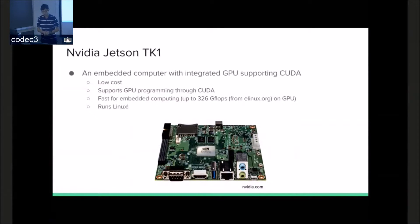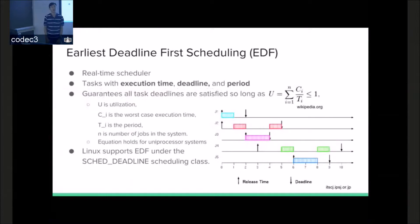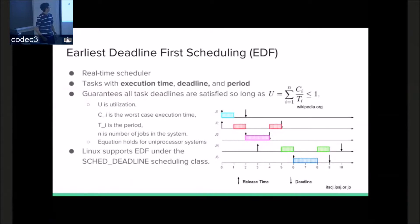Why does this matter? Because we want to run this in real time using something called Earliest Deadline First scheduling. This is a real-time scheduler — a scheduler is an operation done by the kernel that tells tasks in the system when they should run and how long they should run. For EDF scheduling, we characterize tasks using three parameters: their execution time, their deadline, and period. For the purposes of this work, deadline and period are effectively equivalent.